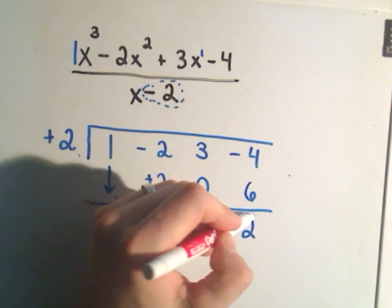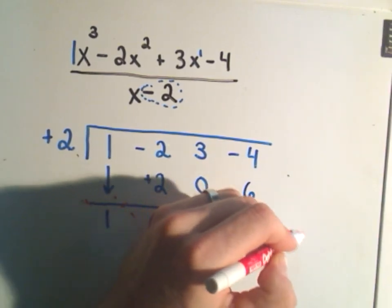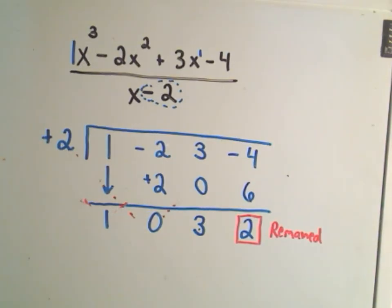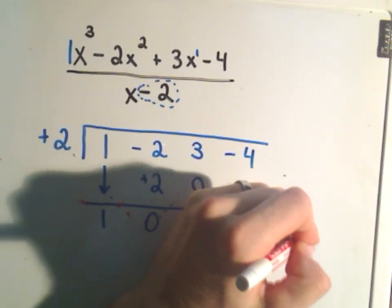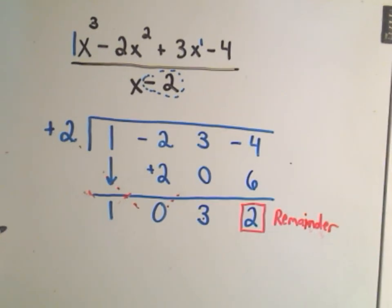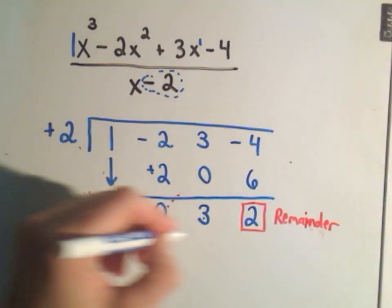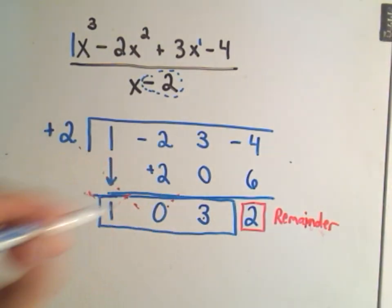This last number is going to be your remainder. And what it says is, in summary, the numbers on the bottom are what are important.